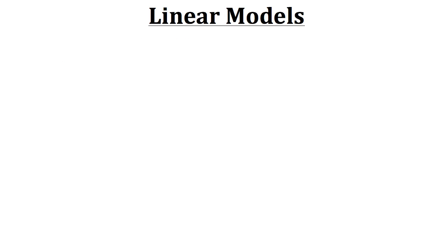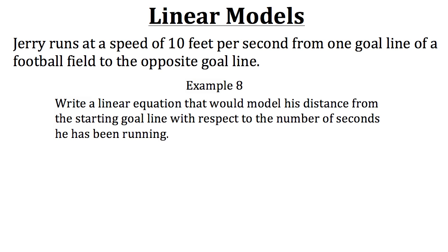So if he works for about 52 hours during the week, he'll get about 30 sales. We're going to look at a concept that is commonly used in linear modeling. And this concept involves the distance that someone goes based on their speed and how long they've been going that speed. So let's take a look at an example to show this. So here, Jerry runs at a speed of 10 feet per second from one goal line of the football field to the opposite goal line.